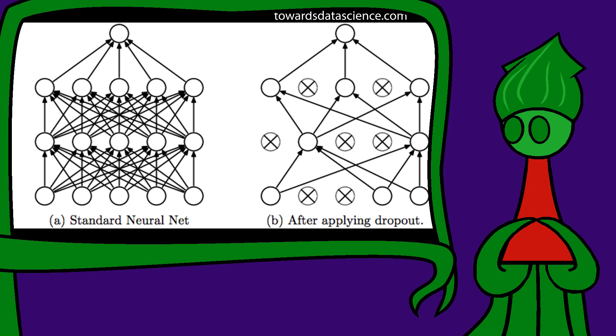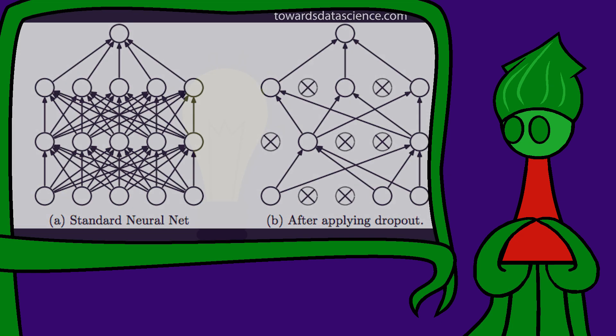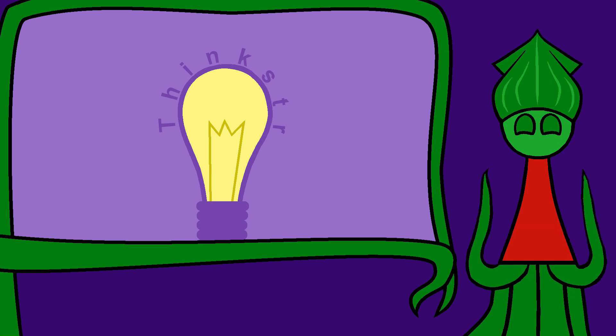Dropout layers, which force models to ignore some percentage of the data, prevent overfitting and keep the models generalizable. Anyway, that's enough explanation. Let's get this model running on the MNIST dataset.